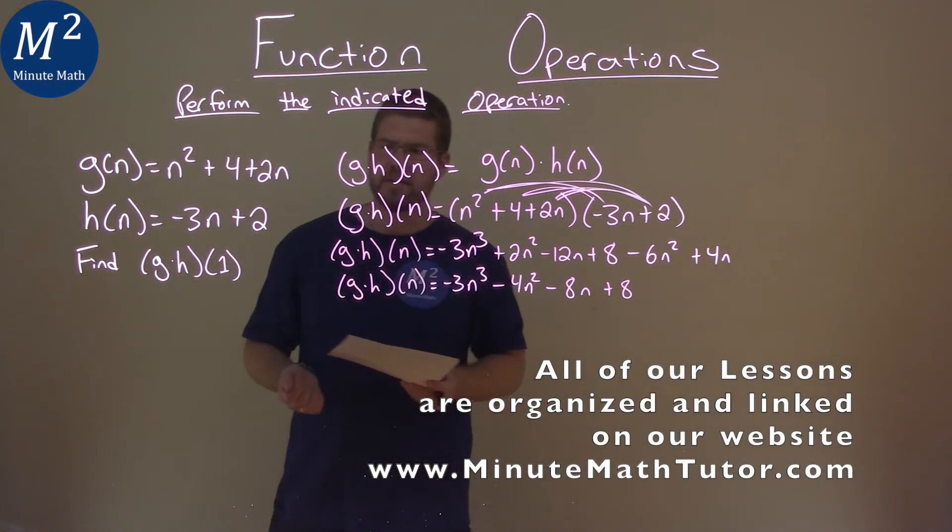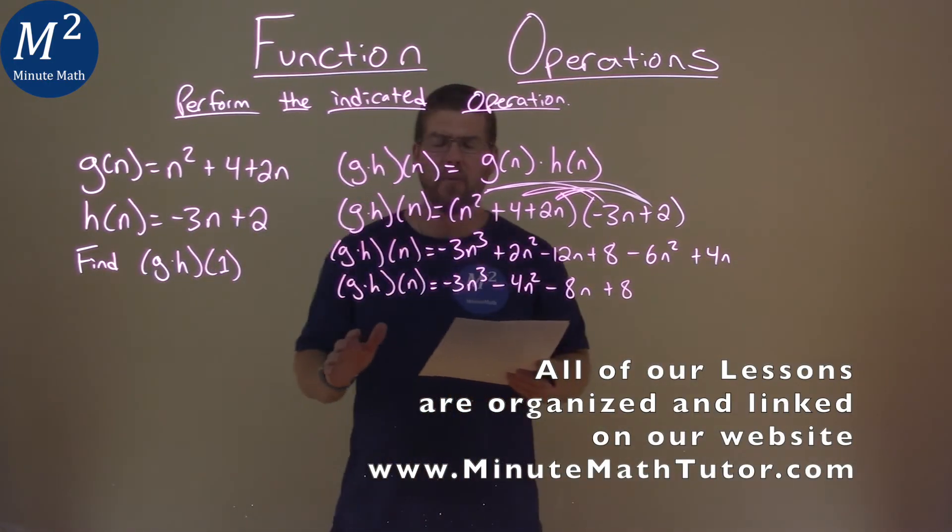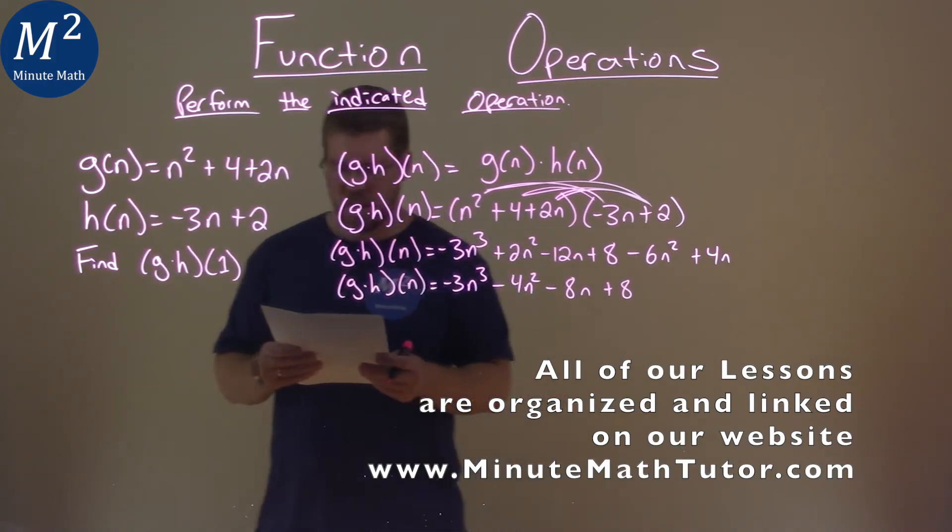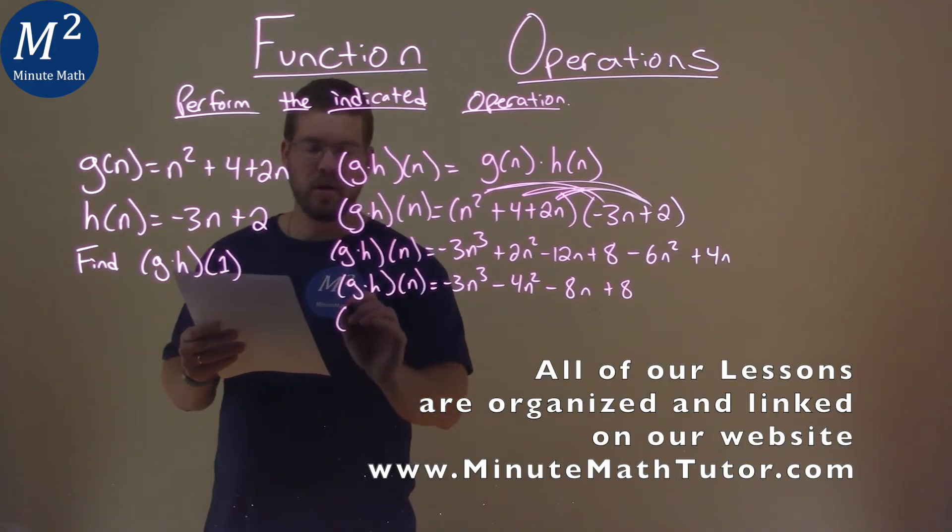So now I've just simplified it slightly here and now I want to apply to find what is g times h of 1. Okay. So in doing so I'm going to plug 1 in for n here.